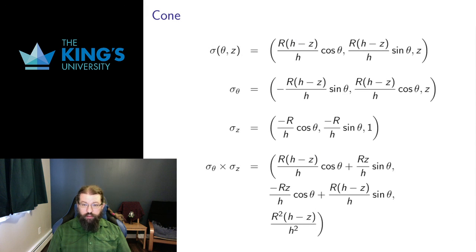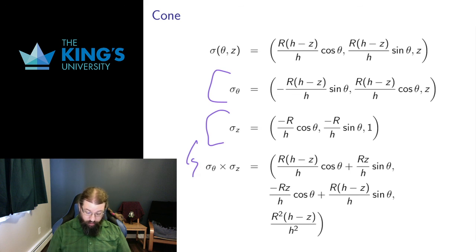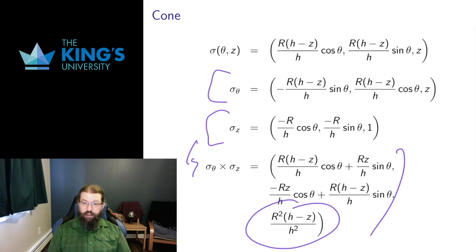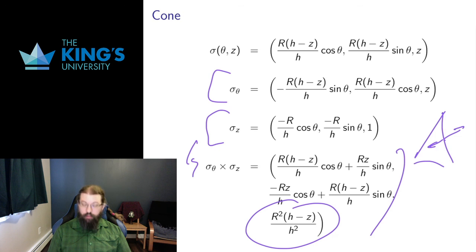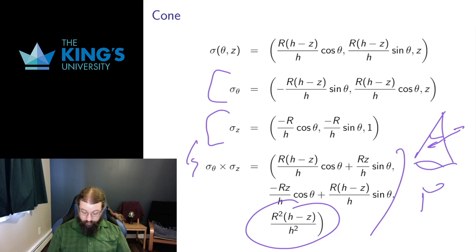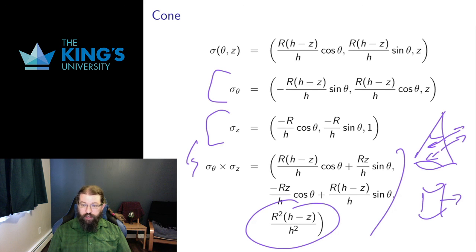I can do it for the cone as well. Taking the partial in theta, the partial in z, and then the cross product gives a somewhat complicated result. But it does have a z-component, which is good — for the cone, the normal should have a positive or negative z-component depending on whether it points outward or inward. Unlike the cylinder, which just pointed straight out, for the cone the normal must point in some positive or negative z direction to be perpendicular to the surface.